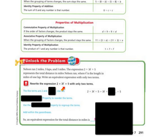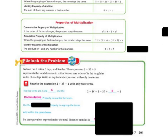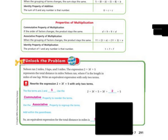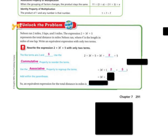We're going to rewrite 2 plus 3L plus 5 with only 2 terms. The like terms are 2 and 5. So we use the commutative property to reorder the terms, then the associative property to regroup, and then add within the parentheses. We take 3L, combine the like terms 2 and 5 — 2 plus 5 is 7 — so we get 3L plus 7 as our final answer.